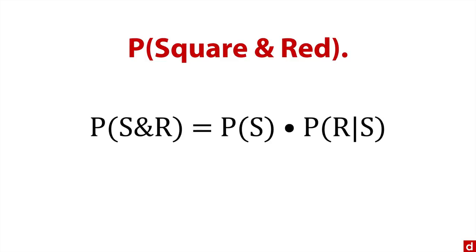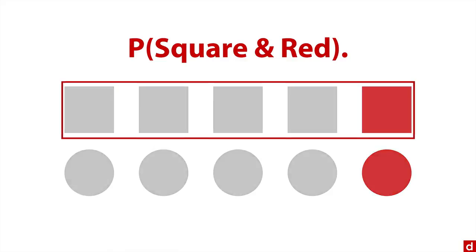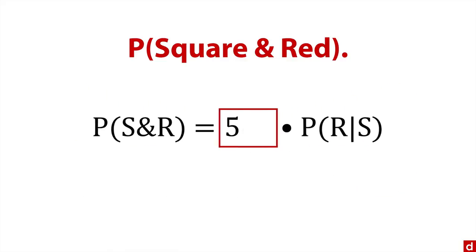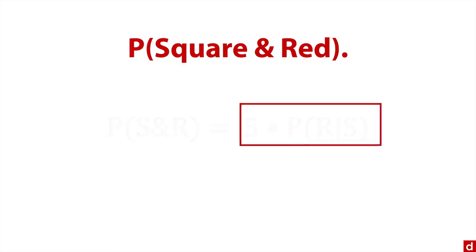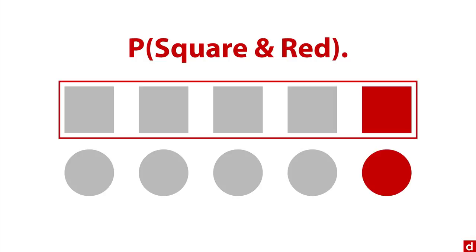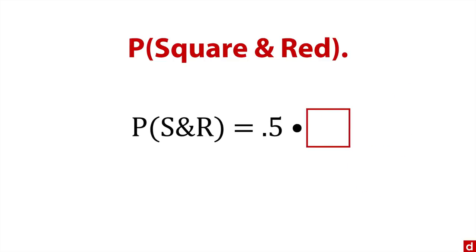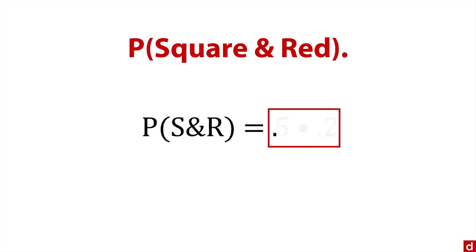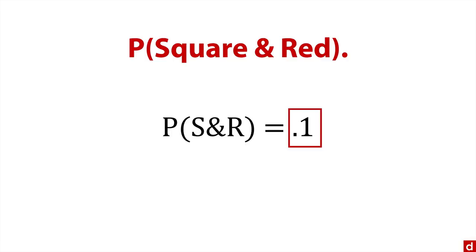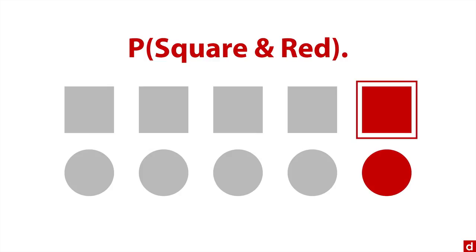We change our formula to S&R for square and red. The probability of square is 5/10, which reduces to 0.5. Then we need the probability of red given that it's a square. Looking only at the squares, there are five of them and one is red. So that's 1/5, which reduces to 0.2. You multiply those: 0.5 × 0.2 = 0.1, or a 10% chance. 10% of our sample space is red squares. There's one out of 10, which confirms what we could do intuitively.